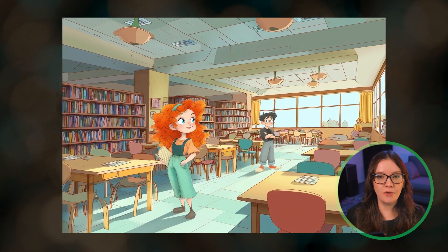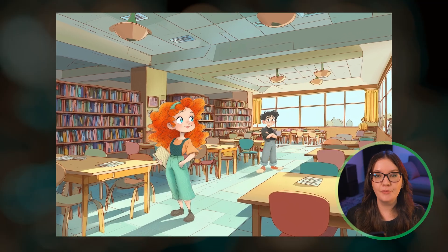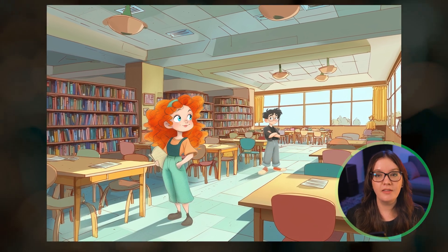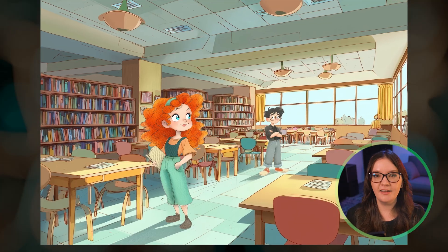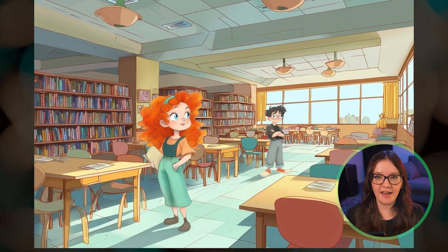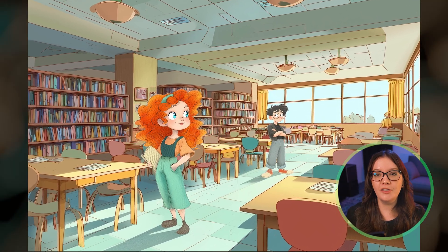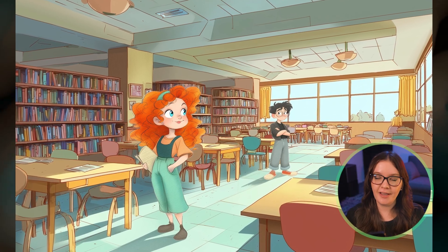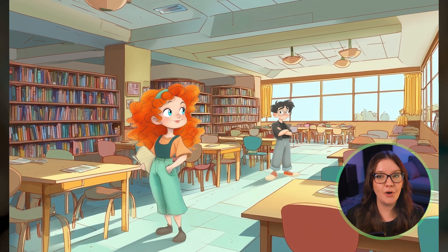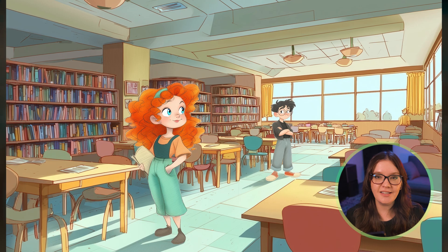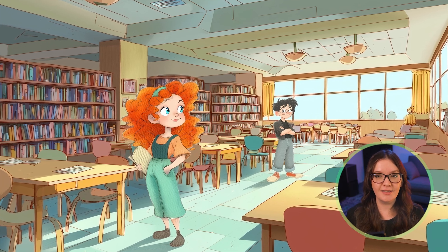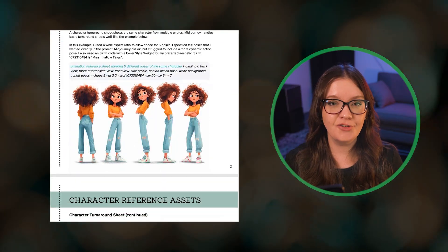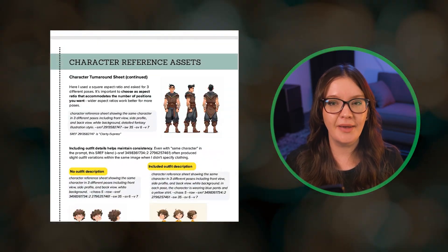The trick with this composite or layers approach is getting the lighting and perspective right, so this is probably going to work best with non-photorealistic scenes like illustrations or 3D animation styles. But this method gives you more control over character placement and is ideal if you've created a bunch of character assets in different poses or positions that you can just drop into different scenes. If you're interested in learning more about creating character assets, check out my August prompt guide over on Patreon.